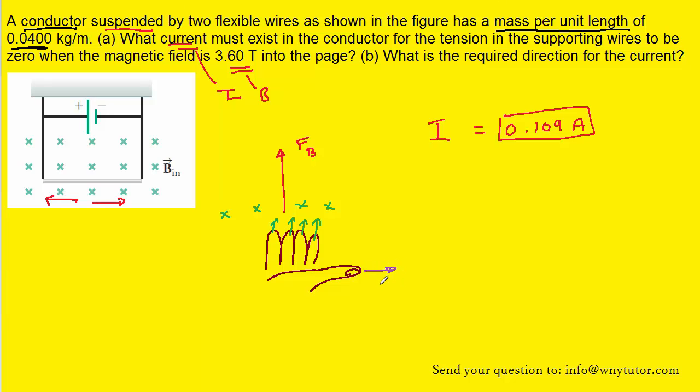And it turns out that your thumb will show you the direction of the current. So that means that in this picture, the current will be indeed flowing to the right as opposed to the left. So the final answer for part B will be to the right.